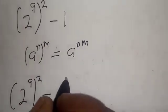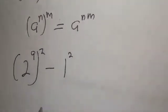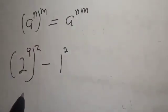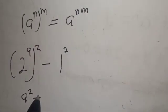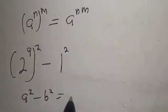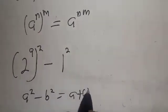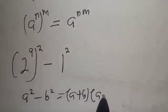This is (2^9)^2 minus 1^2. Now this is difference of two squares. a^2 - b^2 is equal to (a+b) multiply by (a-b).